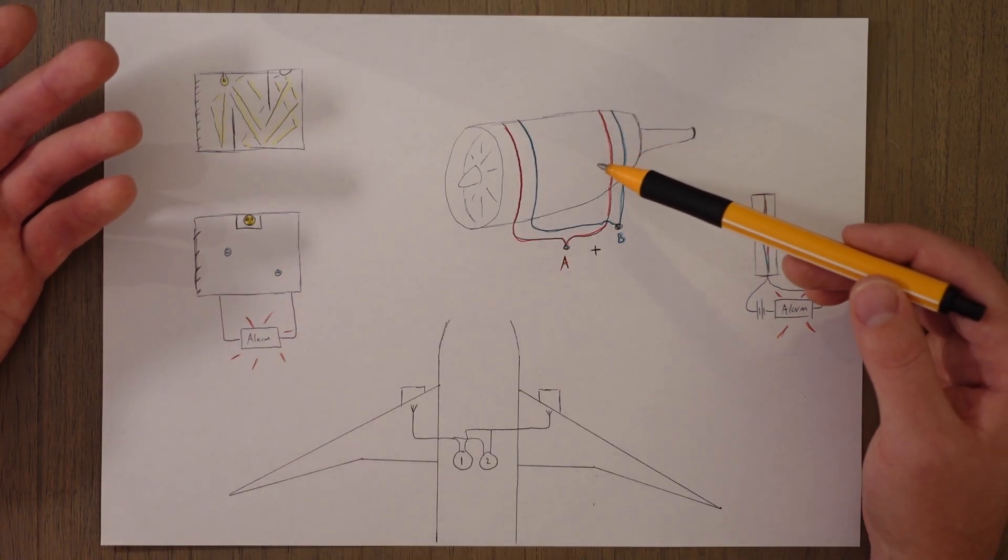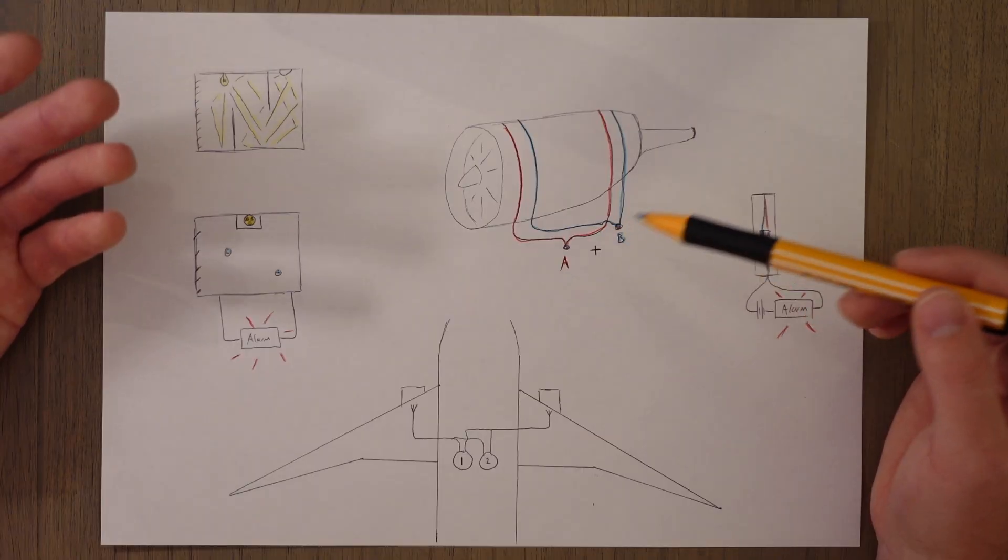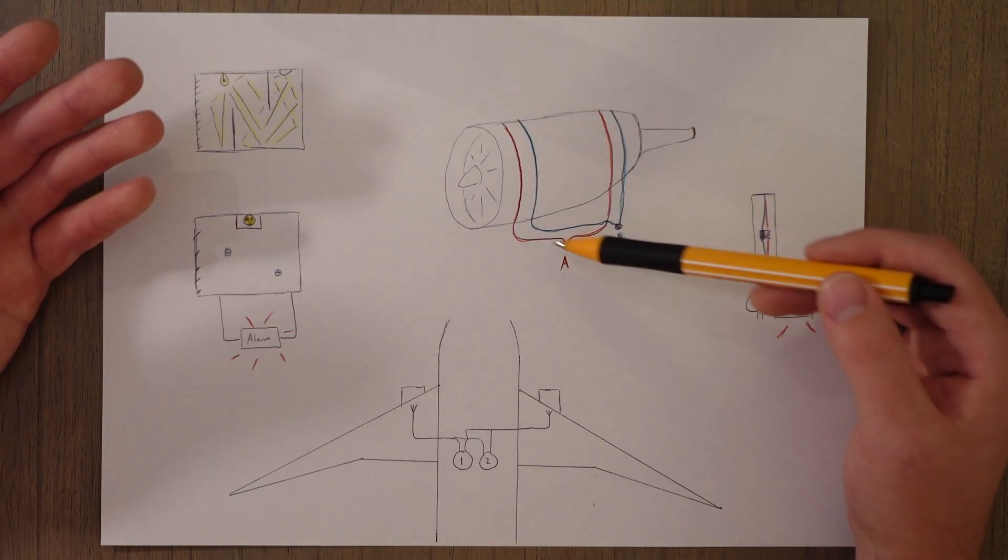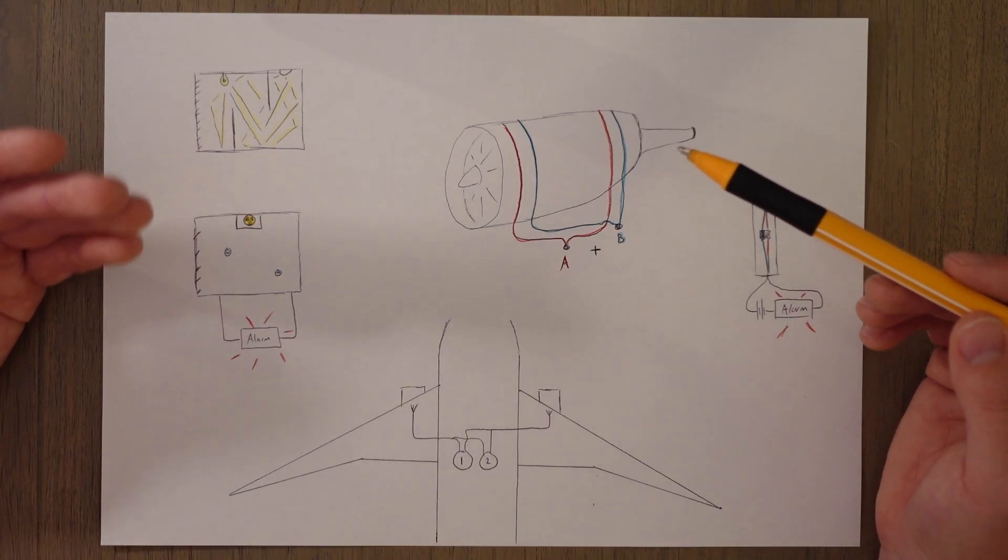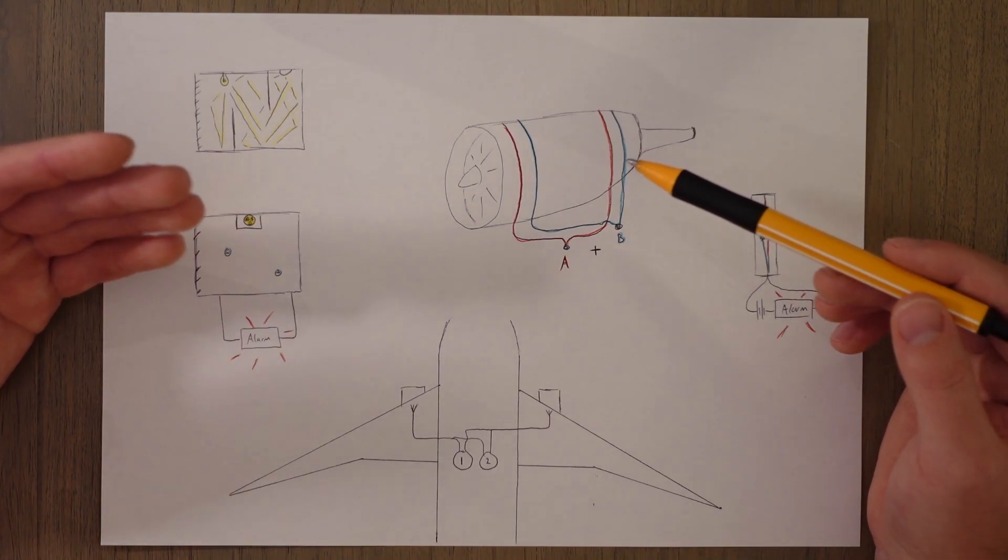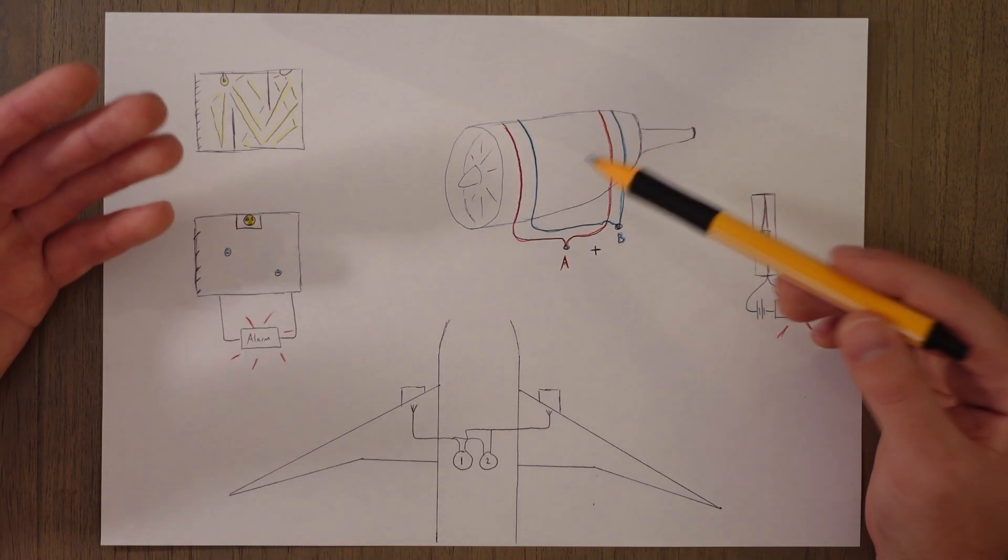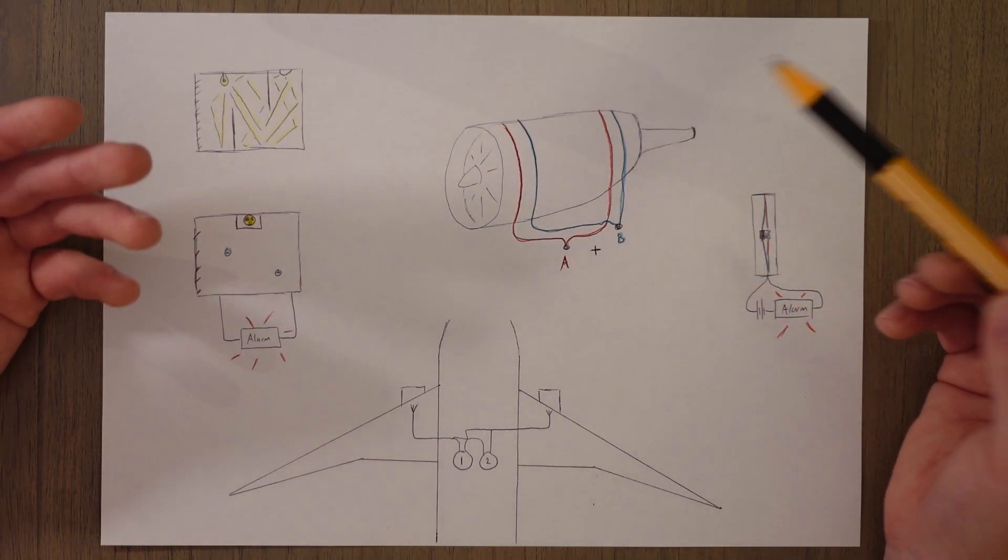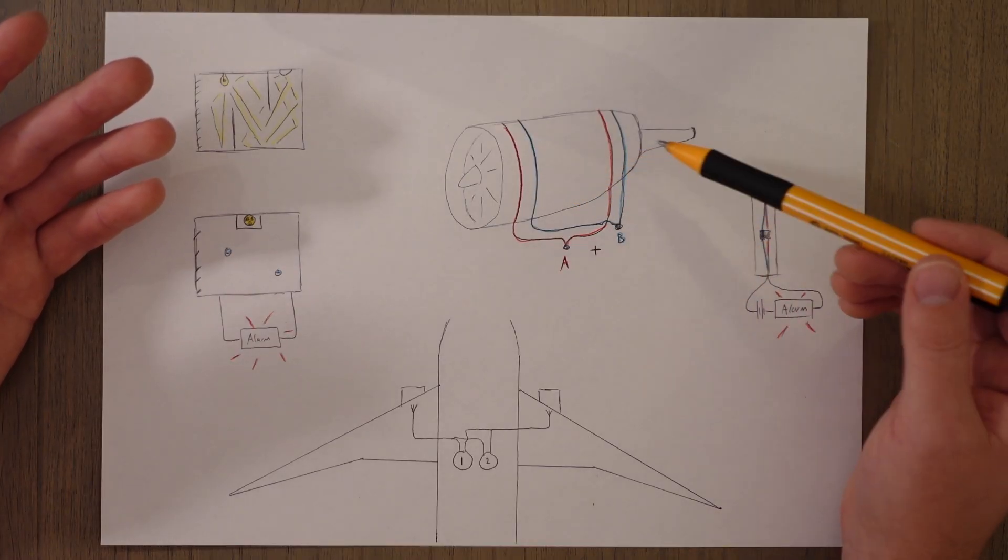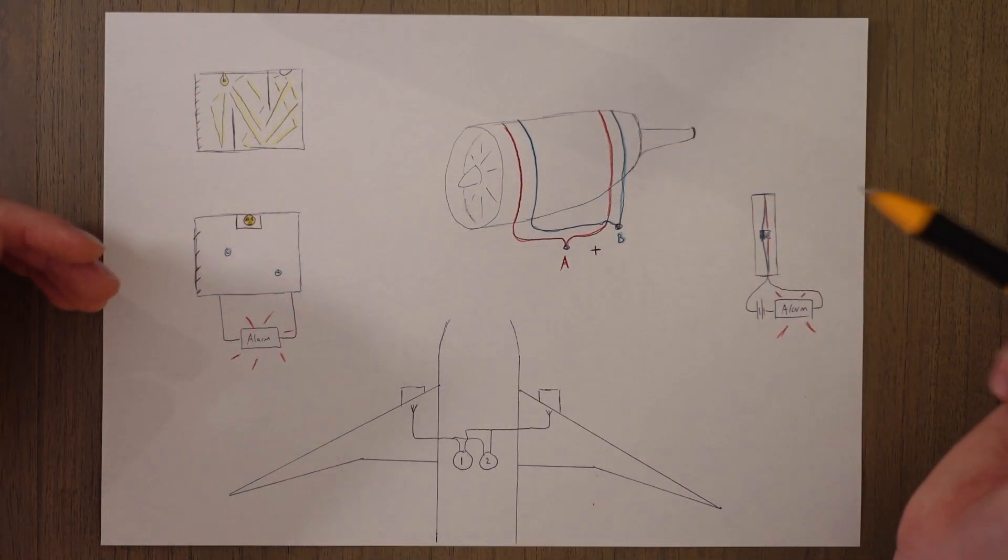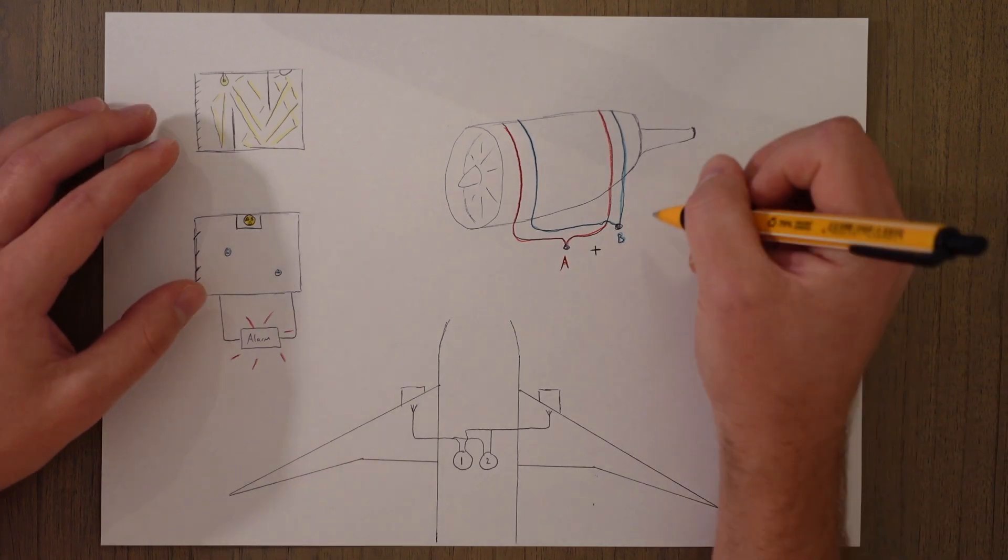The first system is what we call the fire loop system. You've got two loops of fire wire and if the temperature gets too hot next to them they melt, break the circuit. You need both of them to break to stop any spurious warnings, and then if both of the loops of wire are broken then we get an alarm sounding.